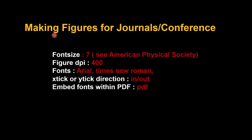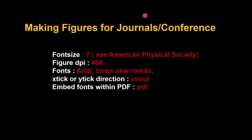In this lecture we are going to learn how to configure matplotlib for making figures in scientific journals. There are several important factors to remember: first, the font size — for a half-column figure it should be 7, based on American Physical Society papers like Physical Review Letters. The figure DPI should be 400 or more for raster-based formats like PNG, JPEG, or TIFF. The font should be Arial, Helvetica, or Times New Roman. The tick direction can be in or out but must be consistent across all figures.